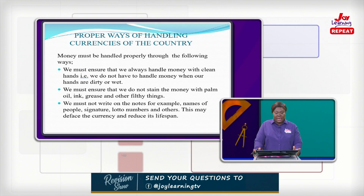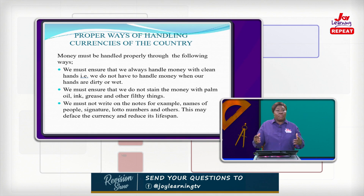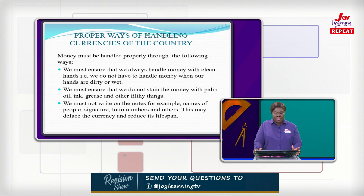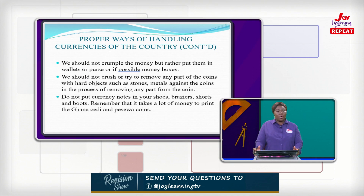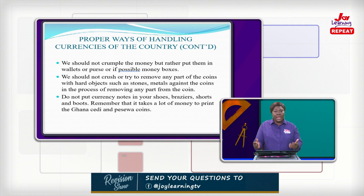We must not write on the notes. For example, some people write their names on money believing the money will come back to them — it will not, because money is always in circulation. Some also sign their signatures or write little numbers on money. This may deface the currency and reduce its lifespan. We should not crumple the money but rather put it in wallets, purses, or money boxes to keep it safe and let it last longer.